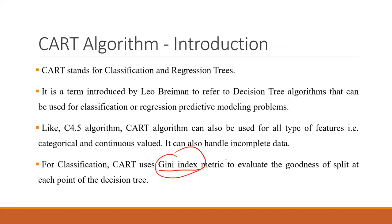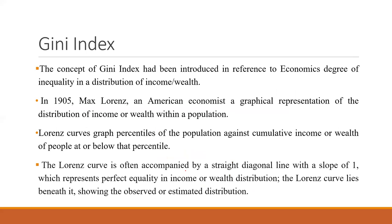There is the Gini index, which is one of the metrics we will use. It can also be called the Gini coefficient or Gini impurity — all these names refer to the same thing. Earlier we used information gain for ID3 and gain ratio for C4.5, but in the CART model we use the Gini coefficient.